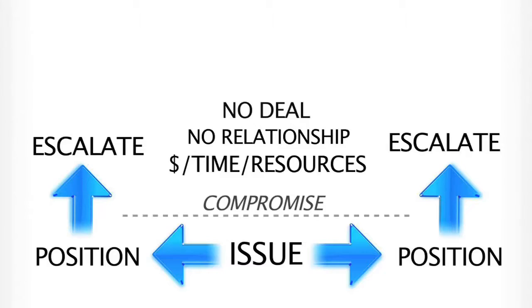Take a look at the graphic on your screen. Here you see the anatomy of the deal that we described last week. At the center point is an issue, and to the outside are positions that parties take on that particular issue. Sometimes parties are willing to compromise those positions and try to find middle ground to get the deal done. But many times it's really difficult to compromise, so parties do things to gain leverage and in doing so they escalate the disagreement between them.